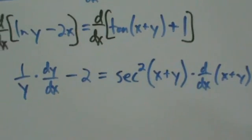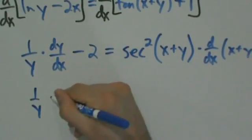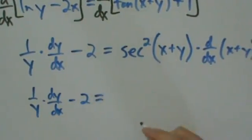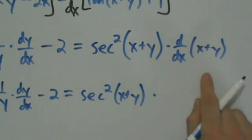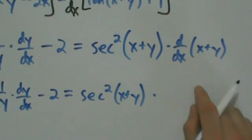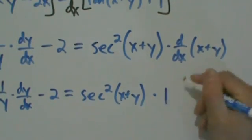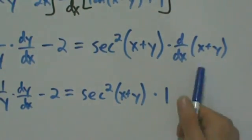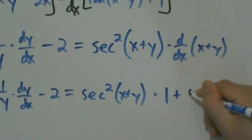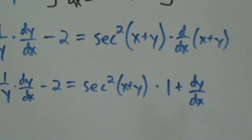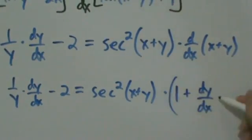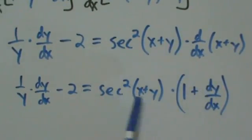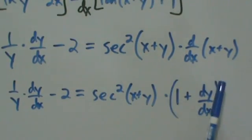So here's what we have so far: 1 over y times dy/dx minus 2 equals secant squared of x plus y times d/dx of x plus y. Now let's simplify. Differentiating term by term inside: d/dx of x is just 1, and d/dx of y is just dy/dx. So d/dx of x plus y equals 1 plus dy/dx. Now, you should notice there's something wrong here — this needs parentheses around it, because this entire derivative is being multiplied by the secant squared.